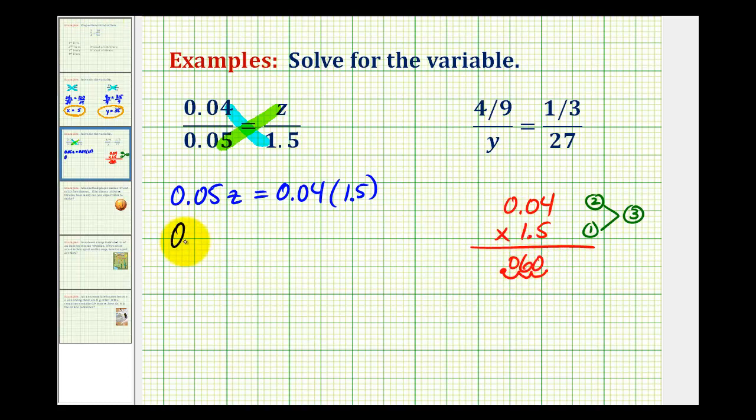So we have 0.05z equals 0.06. Remember it is better to have a zero in the ones column. And now to solve for z, we'll divide both sides by 0.05. So we have z equal to this quotient. So let's go ahead and perform this division.